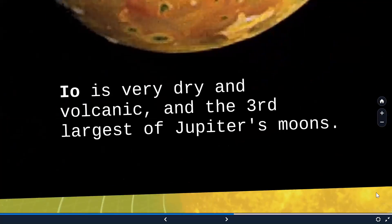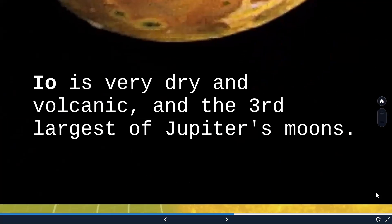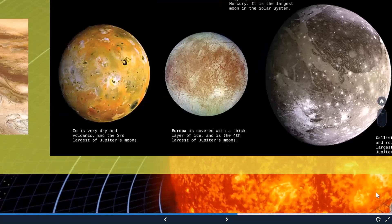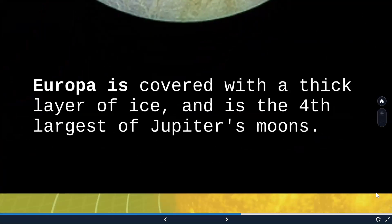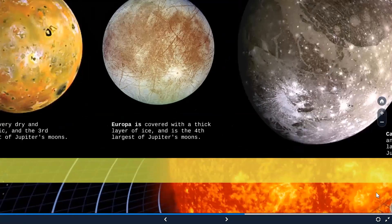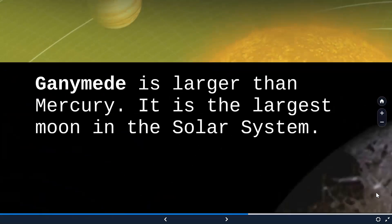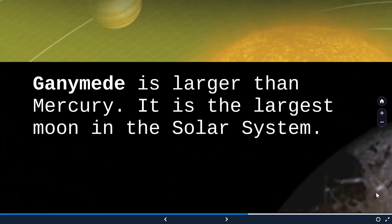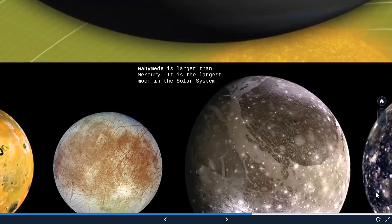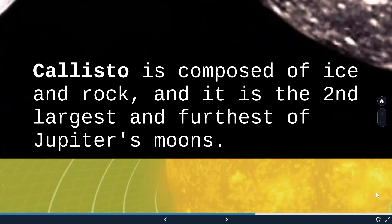The four Galilean moons of Jupiter are: Io, which is very dry and volcanic and the third largest of Jupiter's moons; Europa, which is covered with a thick layer of ice and is the fourth largest; Ganymede, which is larger than Mercury and is the largest moon in the solar system; and Callisto, which is composed of ice and rock and is the second largest and furthest of Jupiter's moons.